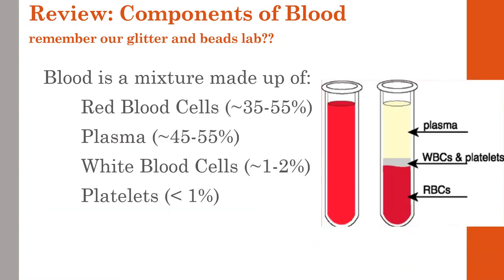Let's do a quick review of the components of blood. You might remember the lab we did with glitter and beads. Blood is a mixture made up of blood cells, plasma, white blood cells, and platelets — very similar to Italian salad dressing. When you shake it up, it's all homogenous, but when you let it sit or put it in a centrifuge, the heavy bits go to the bottom, the less heavy bits go to the middle, and the lighter bits go to the top. Red blood cells make up almost half the blood volume, plasma the other half, and a very small fraction in the middle is white blood cells and platelets.